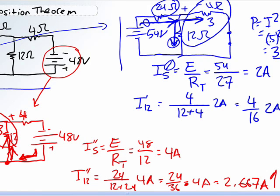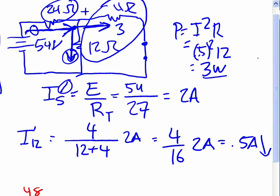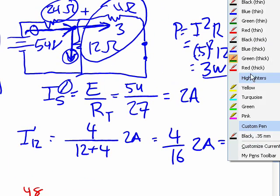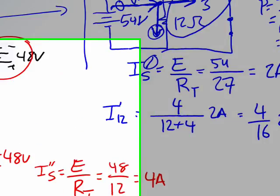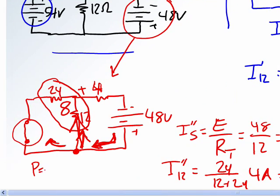So just as an aside here, we want to calculate what that power would have been if there were 2.667 amps. Again, P equals I squared R.